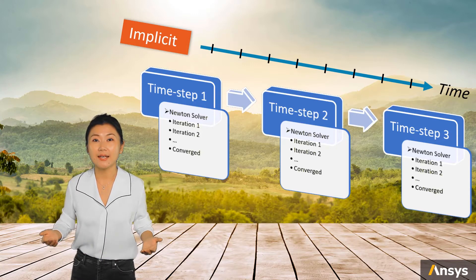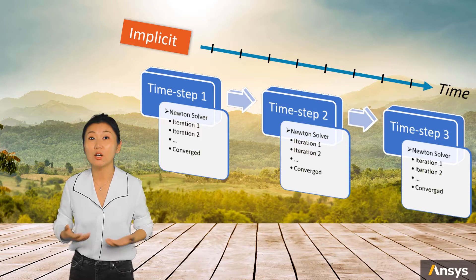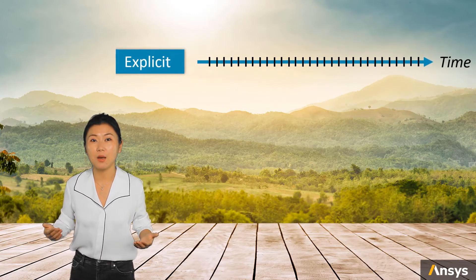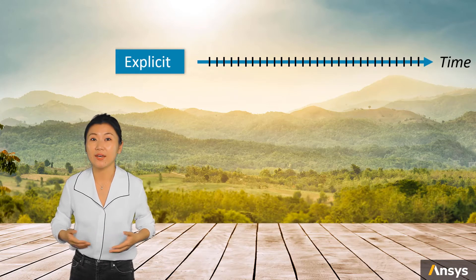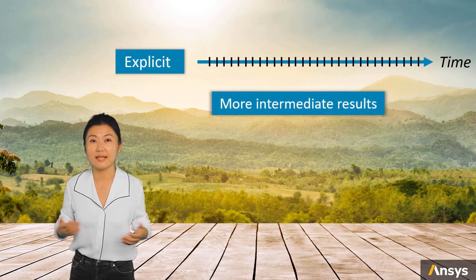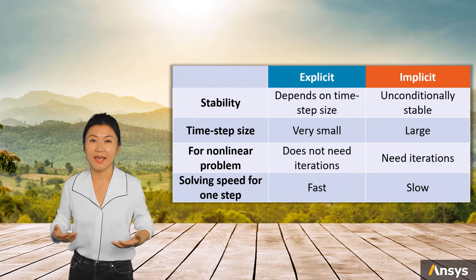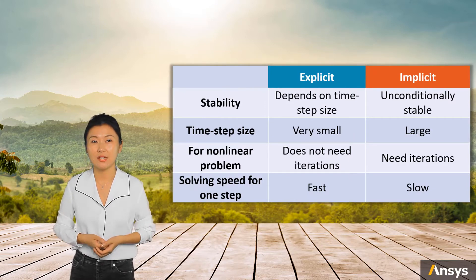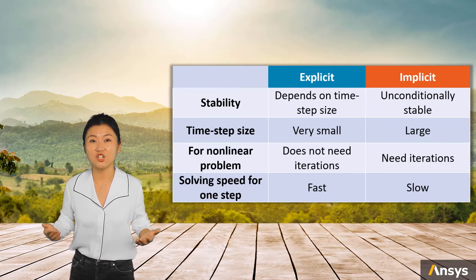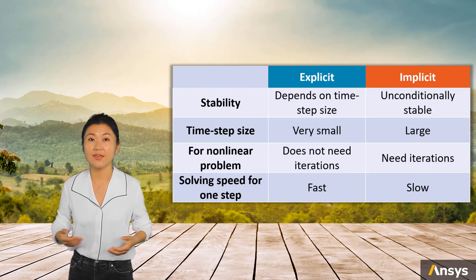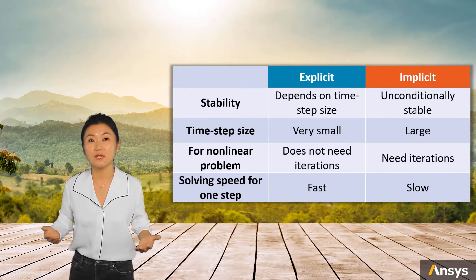On the other side, explicit has no such trouble. No iteration is needed inside one time step. It can use very small time steps because of its simplicity, so it can find much more intermediate results, which is preferred for accuracy. To sum up, we cannot directly compare the accuracy of the two methods — each has its advantage and disadvantage, and they should be used in different applications.